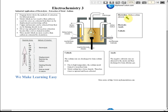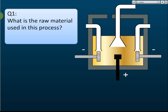The raw material we use is sodium chloride. Sodium chloride is table salt — the salt that you eat every day. So the raw material that we use is sodium chloride, or NaCl.